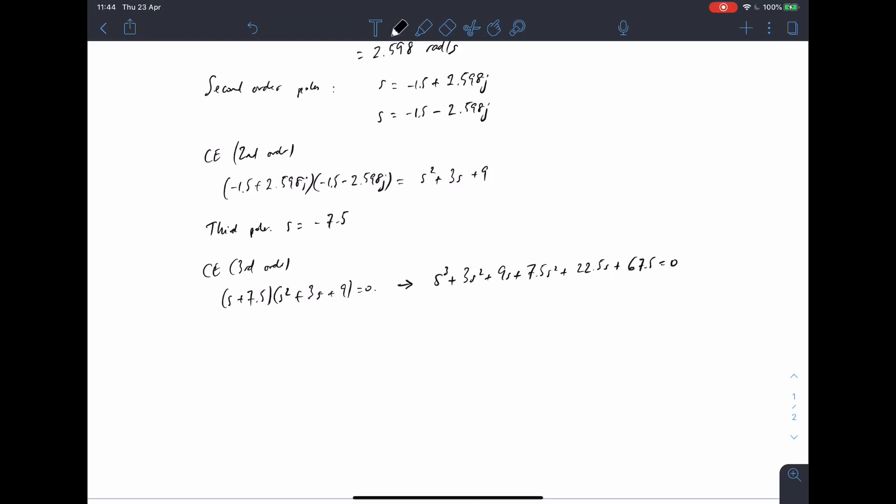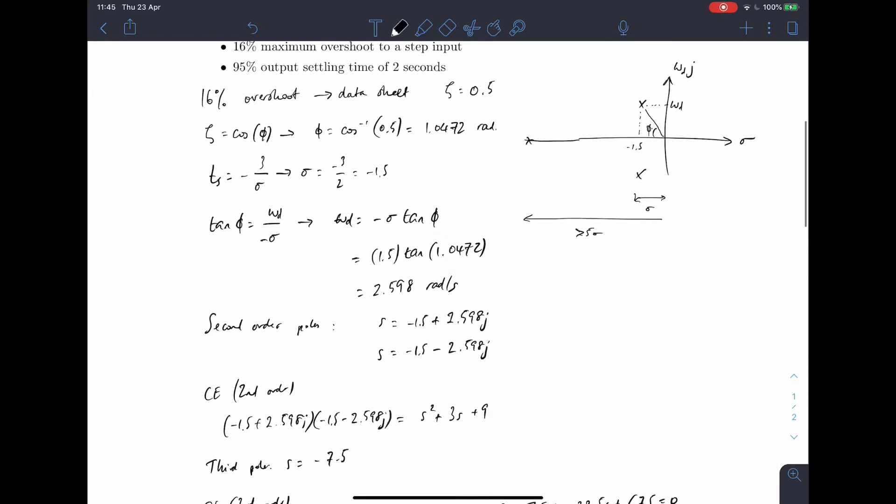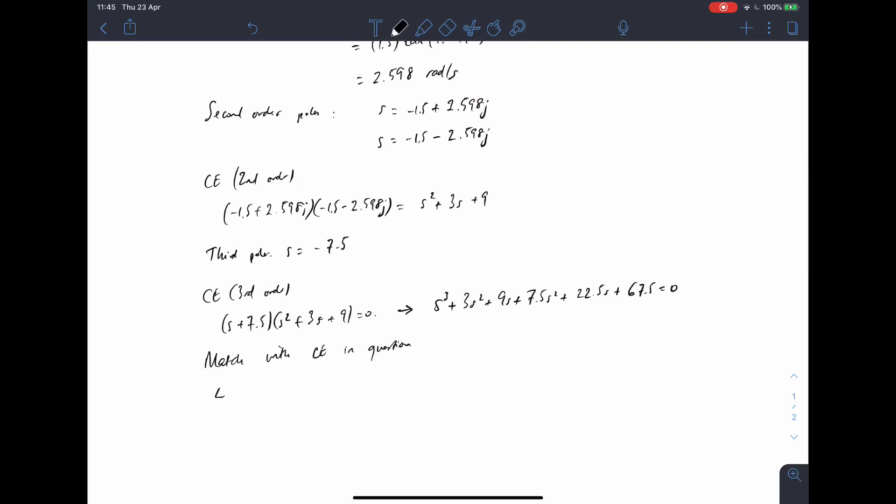And so now we can match up in question. And we can see quite clearly that 4 plus 4 plus Kd must equal, we've got 10.5. So that means that Kd must be 6.5.